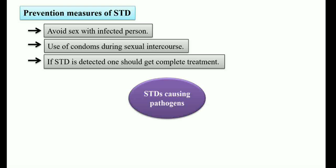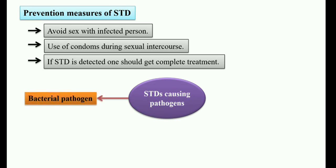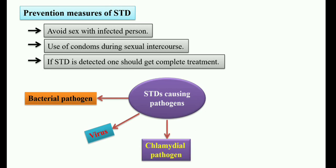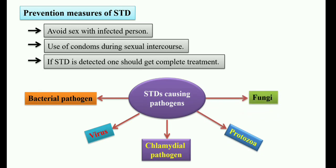The pathogens responsible for STDs include: bacterial pathogens, viruses, chlamydia, protozoa, and fungi. These are the main pathogens involved in sexually transmitted diseases. We will discuss each form of these pathogens. We will start from bacterial pathogens.